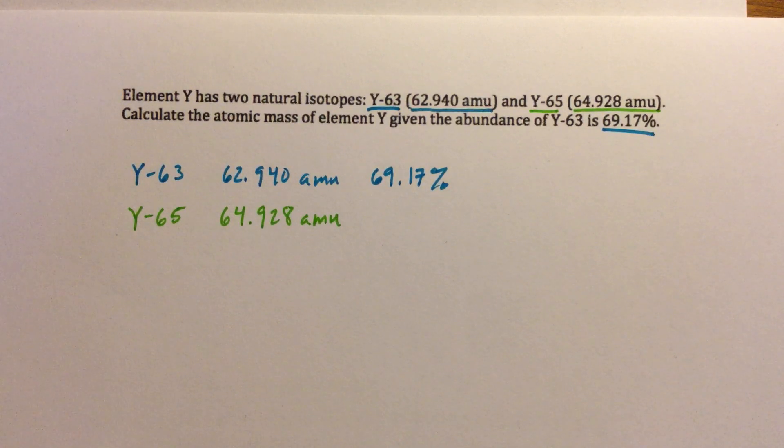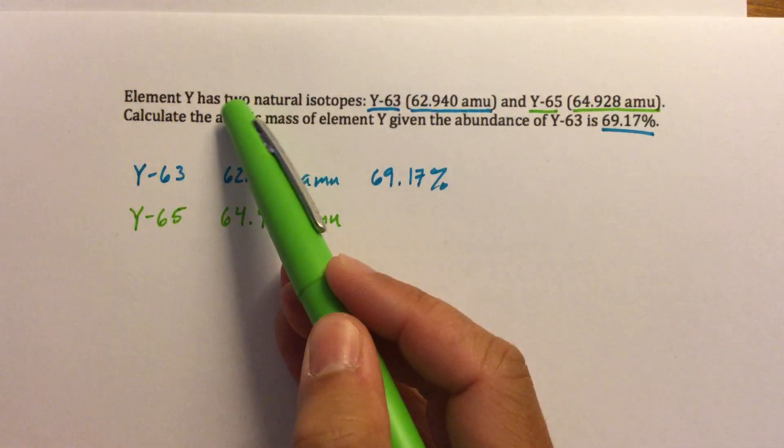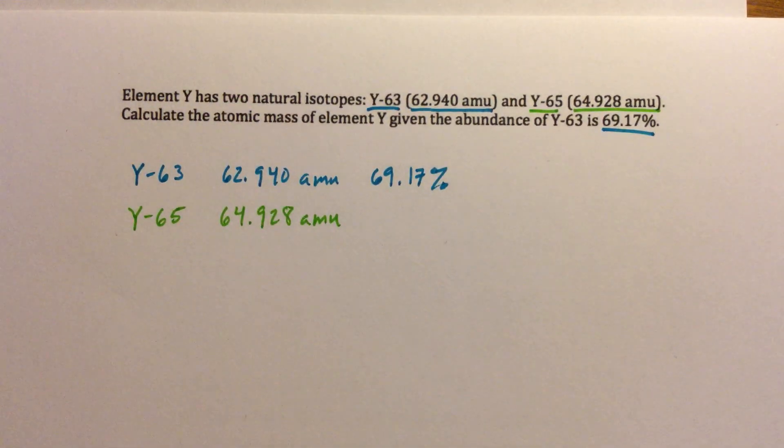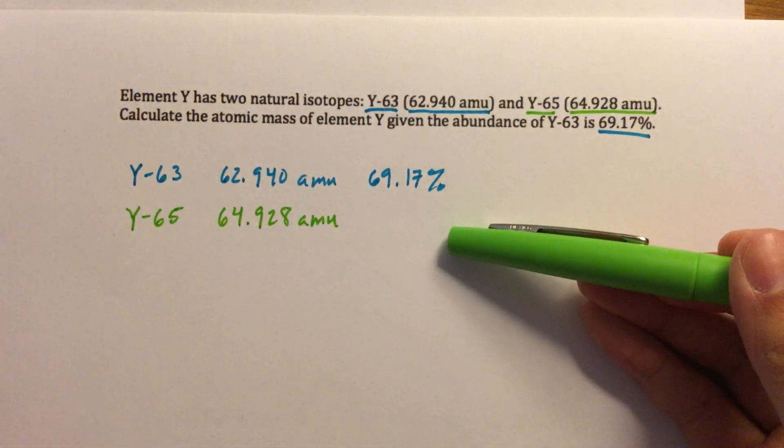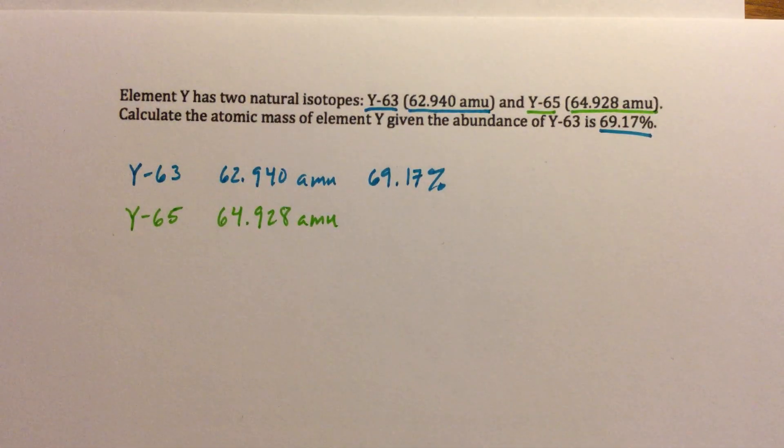So think about, you are given the percentage of all of these isotopes. It's telling you that there are only two isotopes. So there's this isotope, and there's this isotope. Together, they make all of the isotopes. So if you have the percentages, what should the percentages add up to?